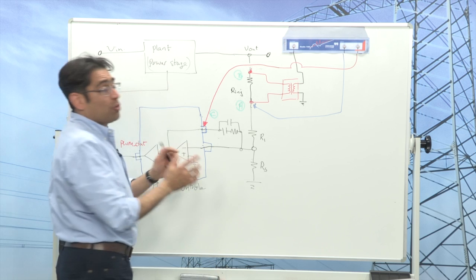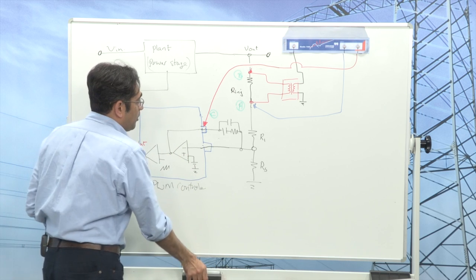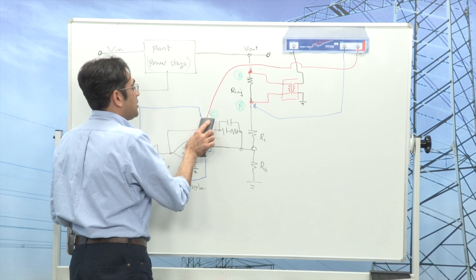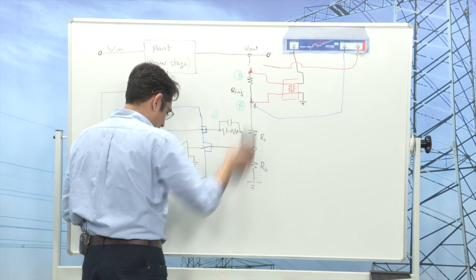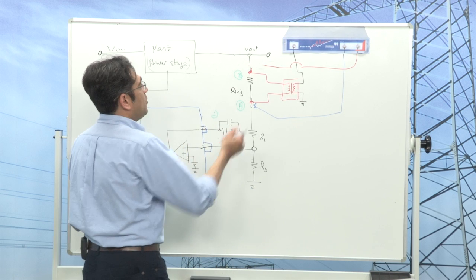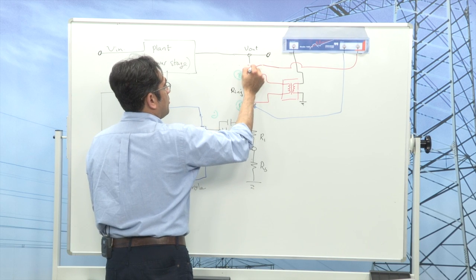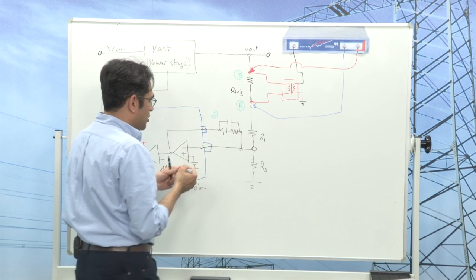All I have to do in order to measure the plant is to remove this probe from this point and put it back exactly where it was before when we measured the loop.